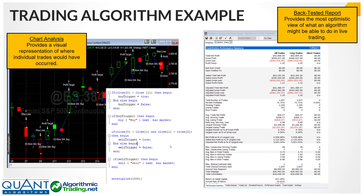Technically, you could have an algo that's not coded — just one you've defined and that you follow. Most technical traders use some kind of algo, even if they don't code it. Usually when people refer to trading algorithms, they refer to some automated trading algo that is coded and running on a platform like TradeStation, NinjaTrader, MultiCharts, or similar. The way it starts is with an idea, the idea is coded, and it's applied to a chart — any symbol or any interval, even a tick chart.